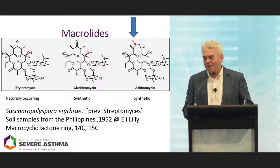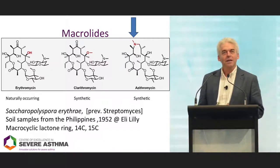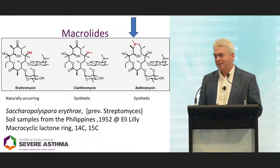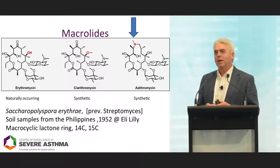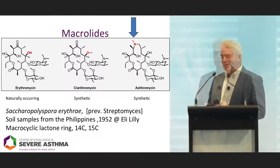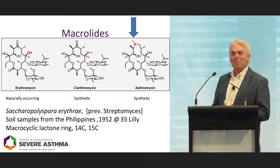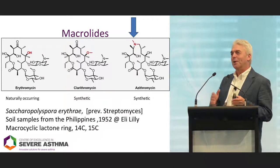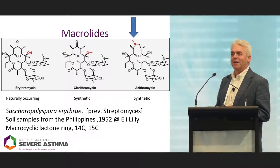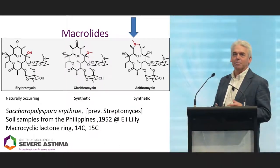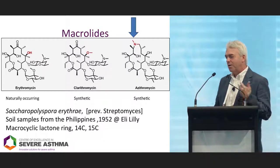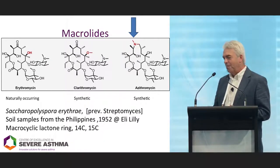If you modify it slightly, you get azithromycin — putting a nitrogen moiety up the top of the lactone ring. Sticking the nitrogen atom there makes it last longer, with a half-life of six weeks, and it penetrates macrophages and is concentrated within cells. So it's quite a useful addition to make a synthetic form of erythromycin.